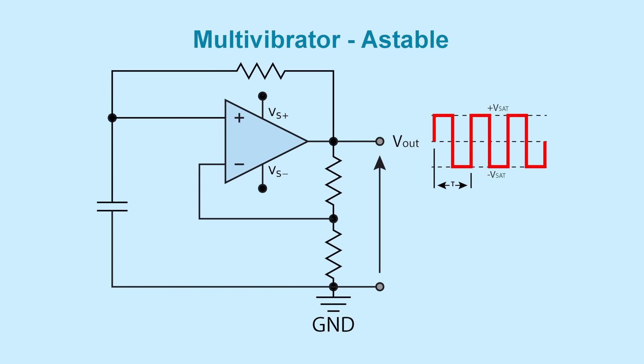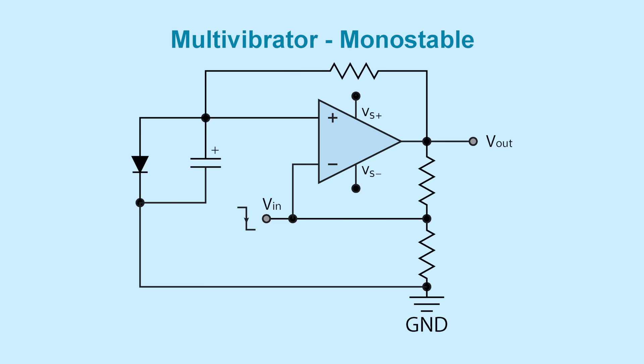Op amps can also be used in place of a 555 timer. To create an astable multivibrator, a resistor and capacitor are connected to the inverting input, and a voltage divider is connected to the non-inverting input, in order to generate a rectangular output waveform. To create a monostable multivibrator circuit, the capacitor is given a discharge path to ground to create a one-shot timer, where the output generates one rectangular pulse per input trigger.